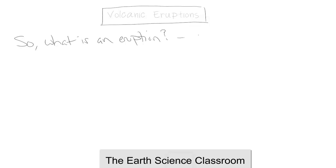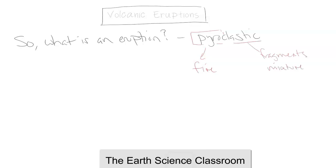Pyroclastic is a very important word to look at. Pyro comes from the Greek word for fire, and clastic comes from fragments or a mixture — so it's basically a combination of lots of different materials in the environment of a volcano, which is superheated through temperatures. Lava can be between 650°C up to 1,250°C.